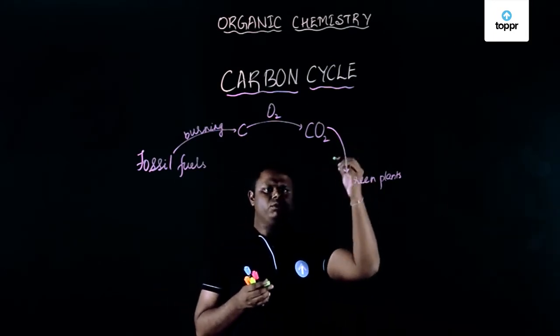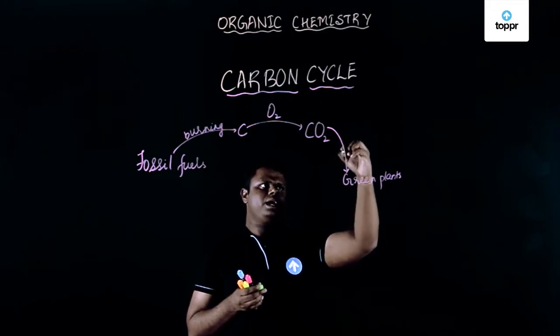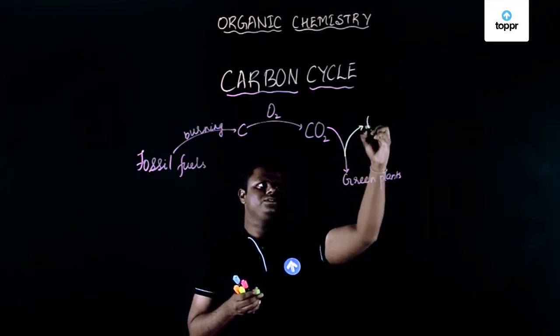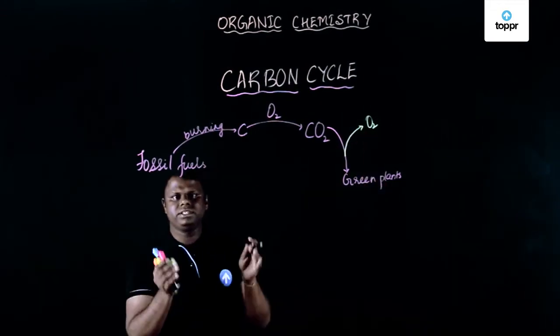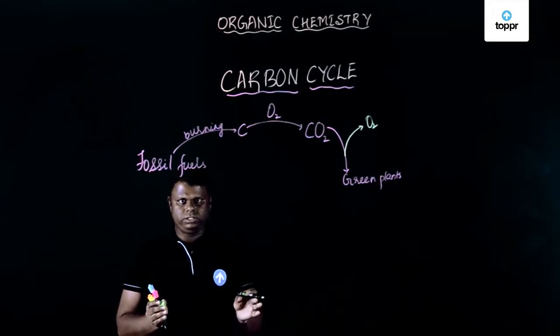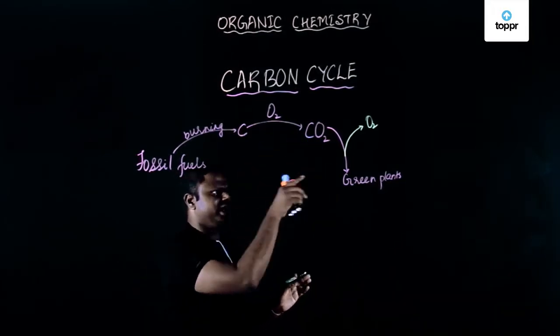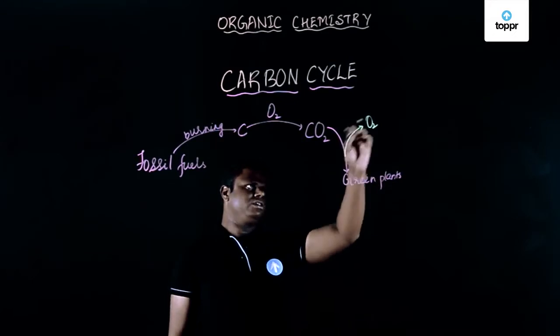Green plants prepare their food and they take in carbon dioxide and they release oxygen. This basically maintains the ecological balance on this earth. Carbon dioxide is taken in and oxygen is released.